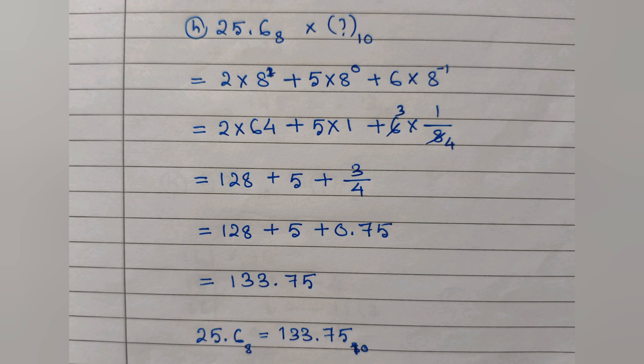Next, we have to convert a fractional octal number into decimal. We write the index as 0, 1 on the left side of the decimal and minus 1 on the right side. Multiplying gives 128 plus 5 for the whole part. The fractional part: 6 into 8 power minus 1 becomes 6 by 8, which equals 0.75 in decimal. After adding all the numbers the answer is 133.75.